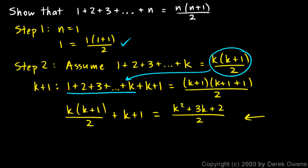Now are these two sides equal? Well, let's distribute the k on the left and divide by 2. So on the left we have k squared over 2, and distributing the k here we also have plus k over 2, plus k plus 1.